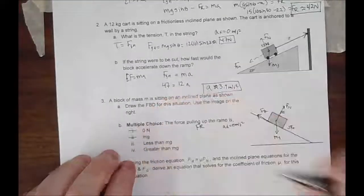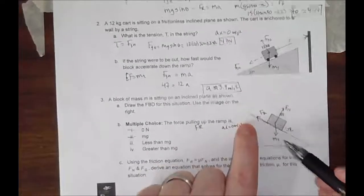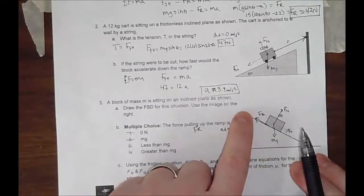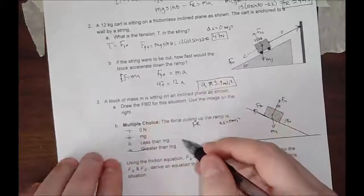If this component right here is greater than mg, that means the frictional force will be accelerating the object up the ramp. So that cannot happen physically. So the only one that makes sense is it has to be less than mg.